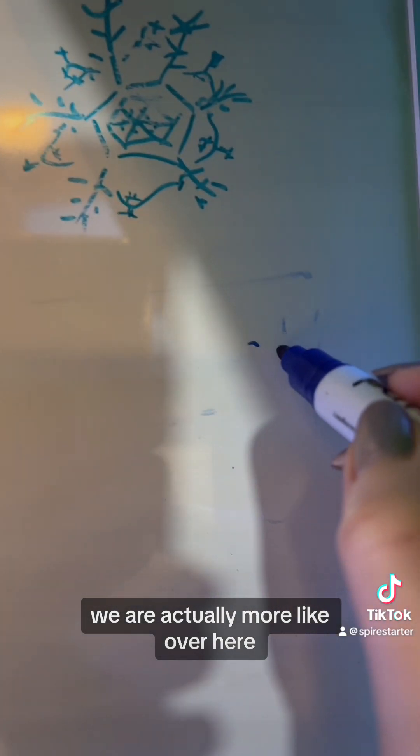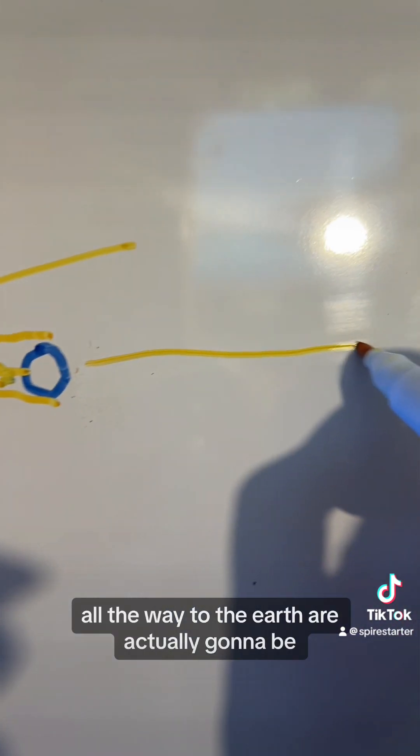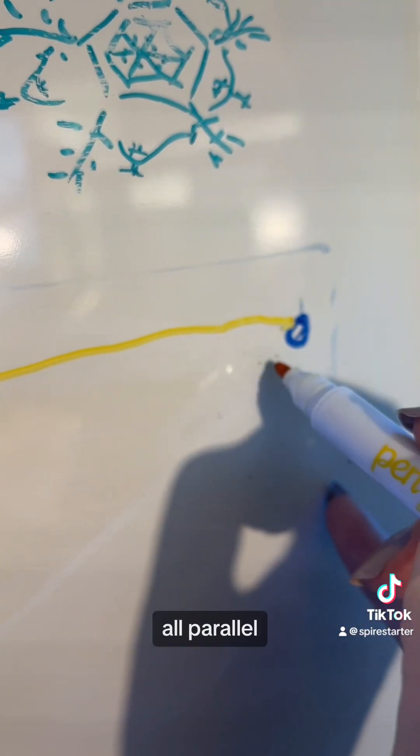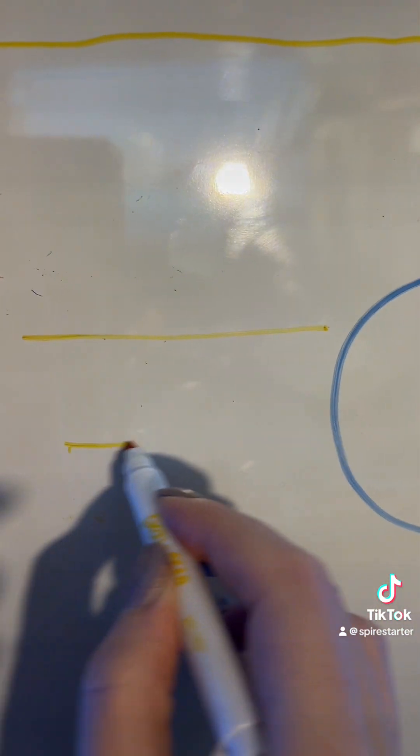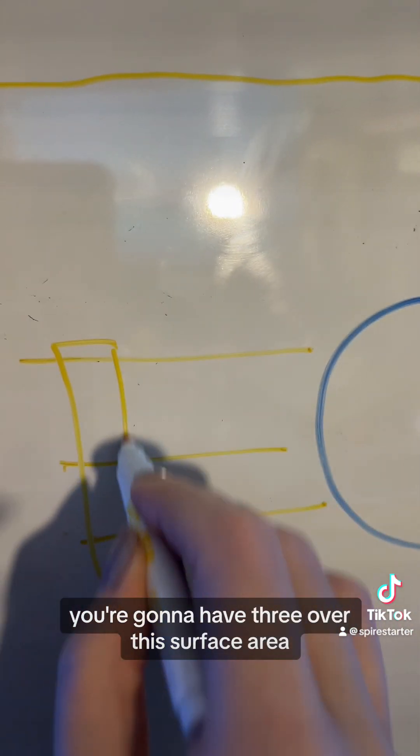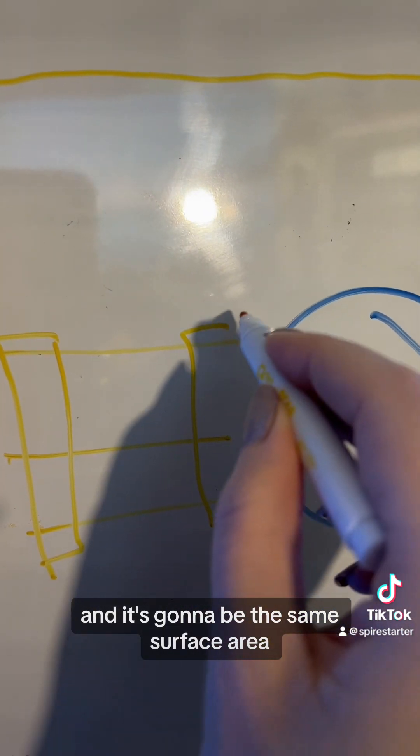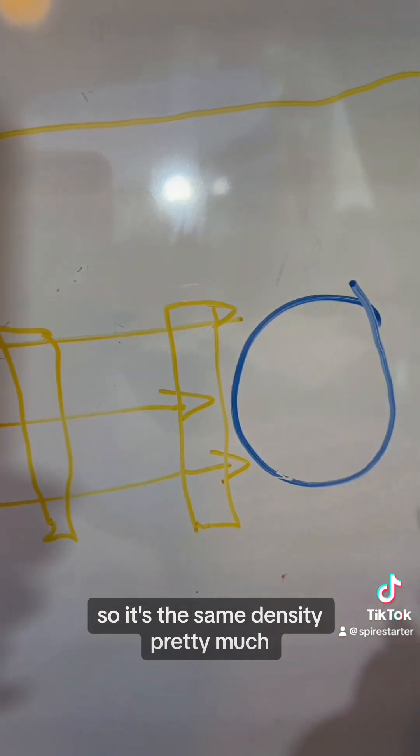But we're much further away than that. We are actually more like over here. So the rays that make it from the sun all the way to the earth are actually going to be all parallel. You're going to have three over this surface area, and it's going to be the same surface area it subtends here. Doesn't change. So it's the same density pretty much.